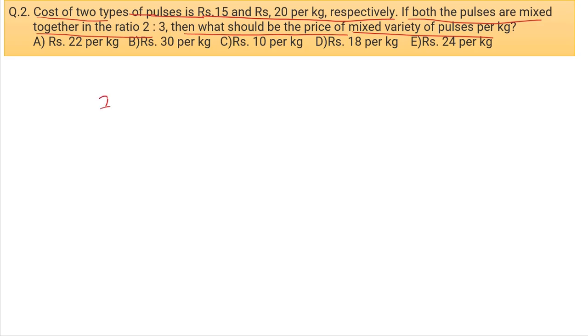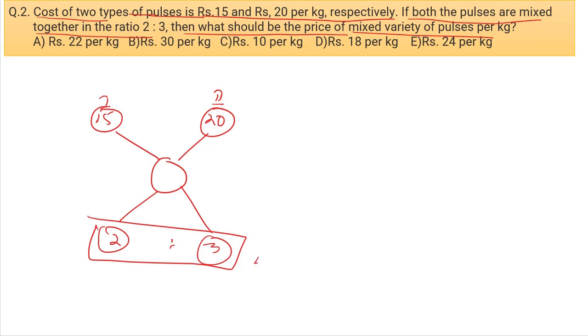You have Rs. 15 per kg variety and Rs. 20 per kg variety. The ratio is 2 to 3, so if you take 2 kg of Rs. 15, that's 30, and 3 kg of Rs. 20, that's 60.